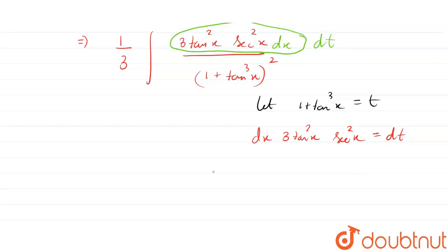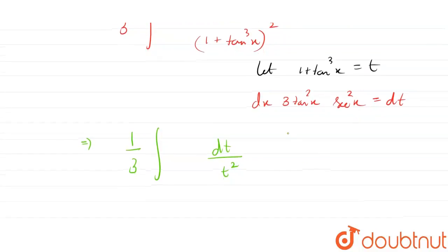So we write here that this integration now becomes 1/3 integration of dt divided by t².